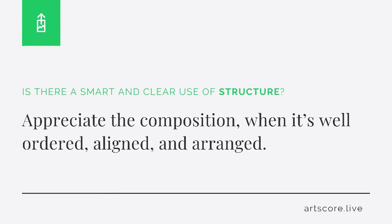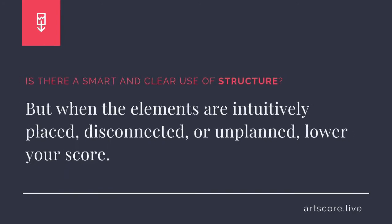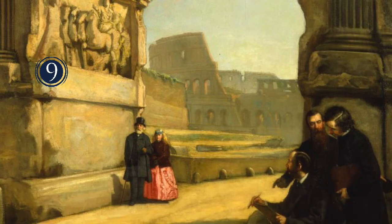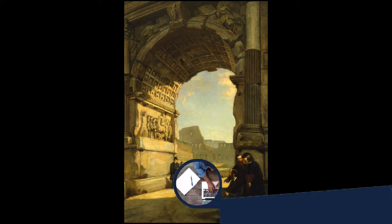Structure. Is there a smart and clear use of structure? Appreciate the composition when it's well-ordered, aligned, and arranged. But when the elements are intuitively placed, disconnected, or unplanned, lower your score. I scored the composition a 9. For me, I clearly see how the elements are strategically ordered, deliberately aligned, and intelligently arranged. What's your score?